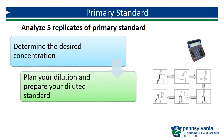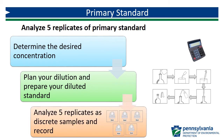You need to prepare enough diluted standard so that you can analyze five replicates, plus a little extra for rinsing the sample cell in between. The calculation to determine your dilution was covered in the video on standards. Please refer to that video if you are not sure how to dilute your primary standard. Once you have prepared your standard, you can analyze five replicates as discrete samples and record your results.